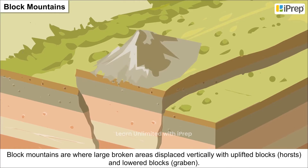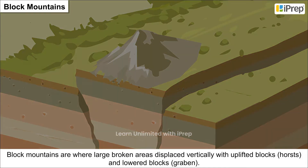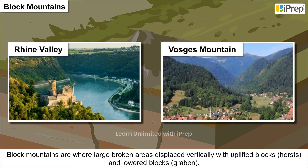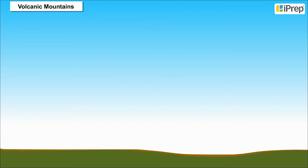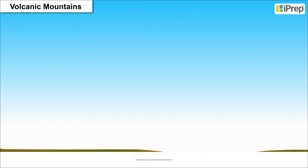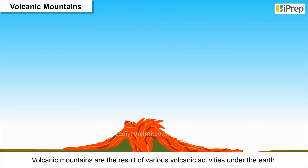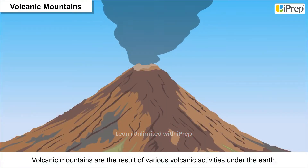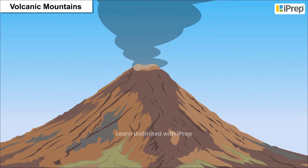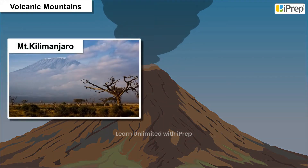Block mountains are where large broken areas are displaced vertically, with uplifted blocks called horsts and lowered blocks called graben. For example, the Rhine Valley and the Vosges mountain in Europe. Volcanic mountains are the result of various volcanic activities under the earth. For example, Mount Kilimanjaro in Africa and Mount Fujiyama in Japan.